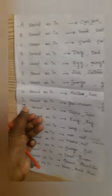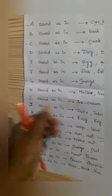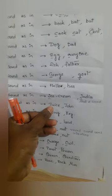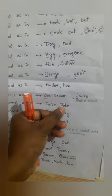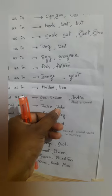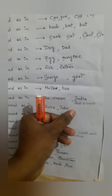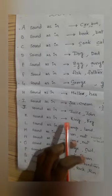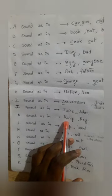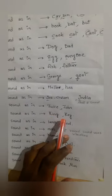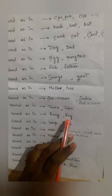Now coming to J, the sound is 'j' — juice, John. You can also say Jack. Now coming to K, it has only one sound which is 'k' as in King, 'k' as in Key.